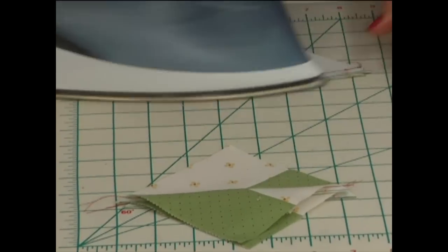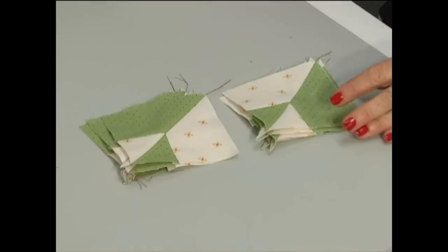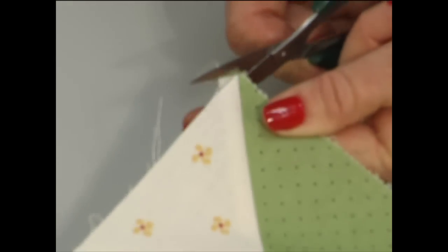Now make one stack for each one of the mirror image blocks and cut off those tips. We don't want any tips hanging out.